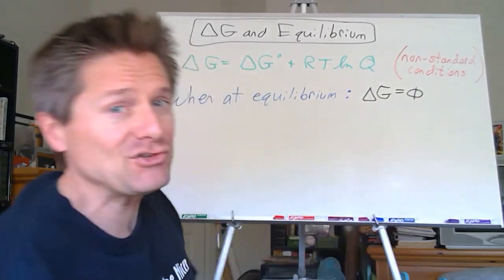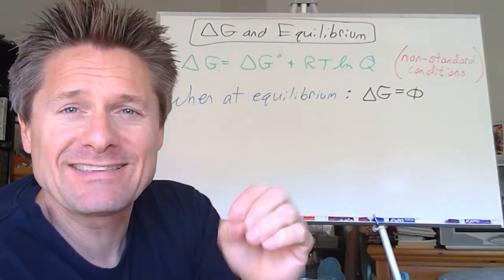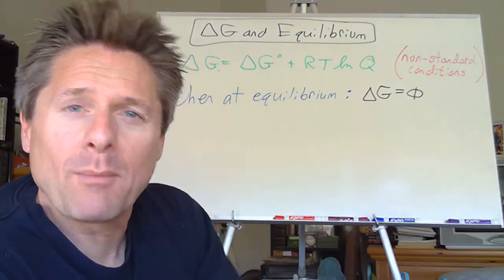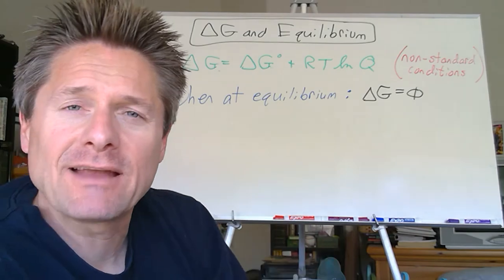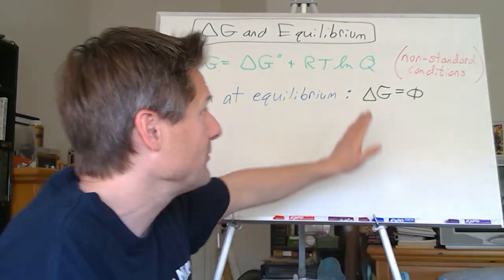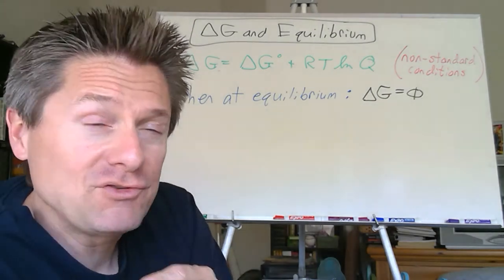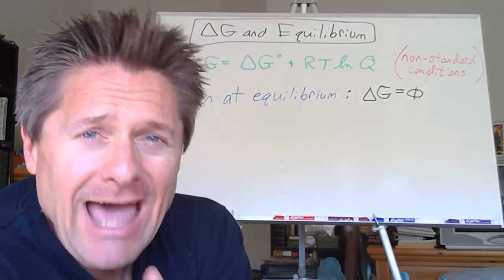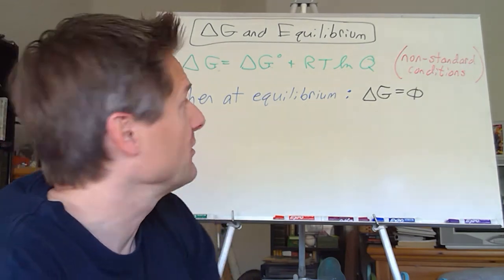Not delta G° — remember delta G° is at specified reference conditions: one atmosphere or one bar pressure, concentrations of one molar, technically an activity of one. That's a lot more restrictive. Delta G is zero at equilibrium. But what else changes? Remember Q is the reaction quotient at non-equilibrium concentrations or partial pressures, but at equilibrium Q...